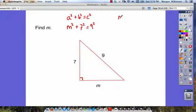m squared plus 7 squared, that's 49 because 7 times 7 is 49, is going to be equal to 9 squared, 9 times 9, that's 81.